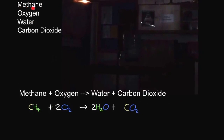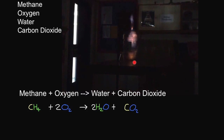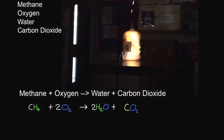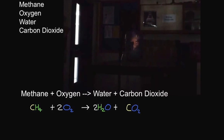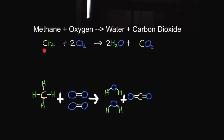There are four other examples of covalent bonding you need to know: methane, oxygen, water, and carbon dioxide. Methane and oxygen react in a combustion reaction to form water and carbon dioxide. In the video, a similar reaction is going on — this is actually ethanol, but it's a similar reaction. The balanced symbol equation is CH4 + 2O2 → 2H2O + CO2. So one molecule of methane reacts with two molecules of oxygen, forming two molecules of water and one molecule of carbon dioxide.